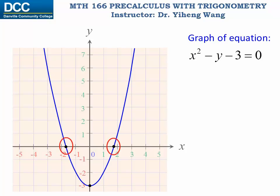These two points are known as the x-intercepts, since they intercept with the x-axis. And this one is known as the y-intercept, since it intercepts with the y-axis.